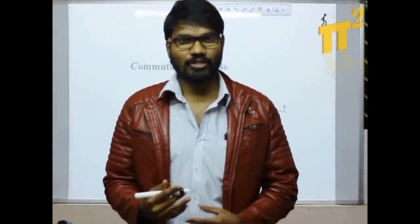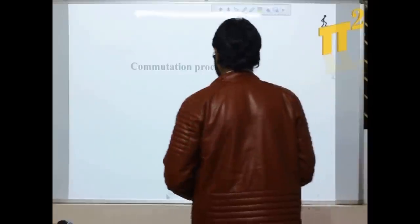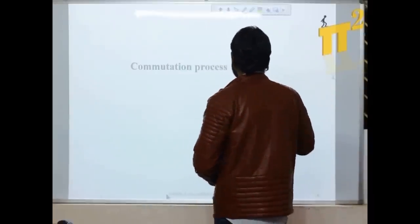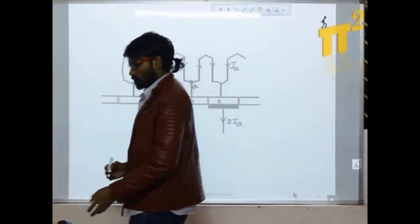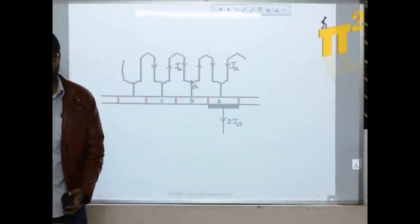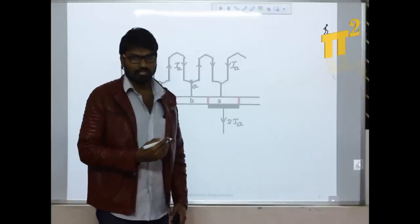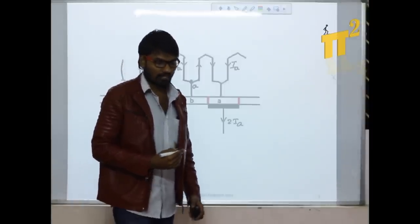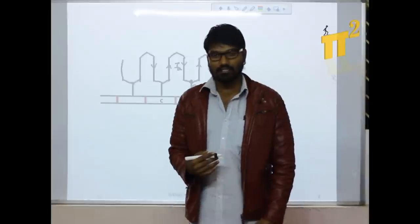Hello everyone. In today's lecture we are going to see the commutation process in a DC machine. Commutation is a process of current reversal — reversal of current in the armature conductors of a DC machine is called commutation.